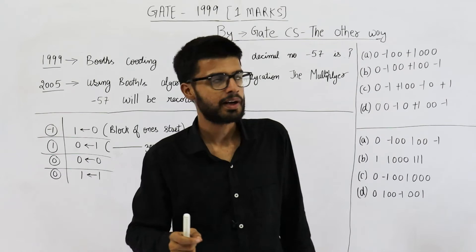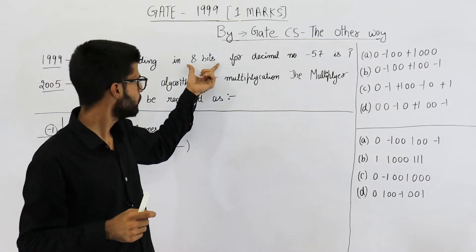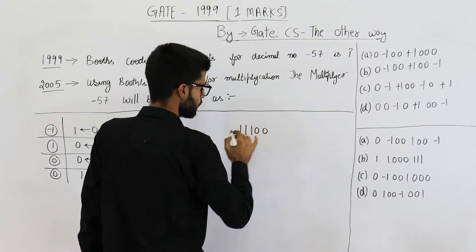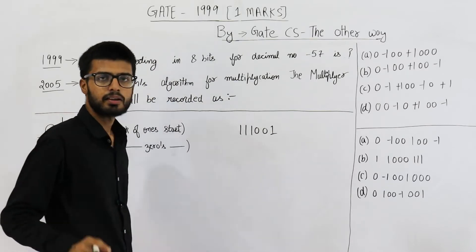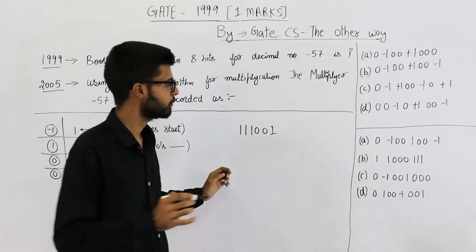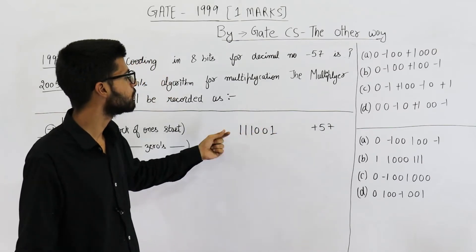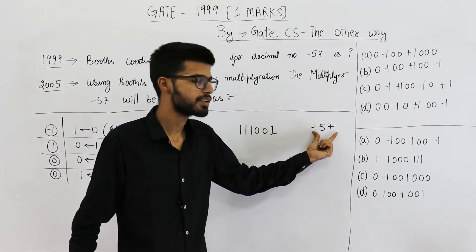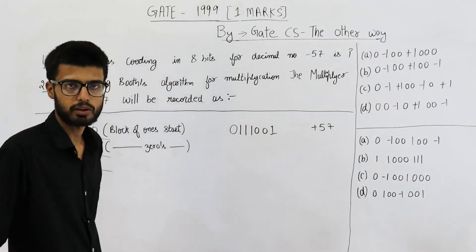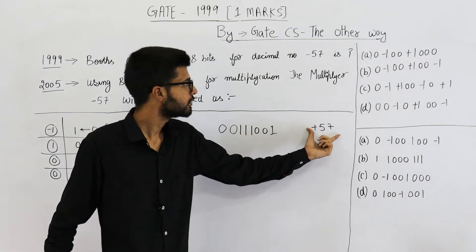For this, first we need to find how our multiplier is represented in 2's complement representation in 8 bits. Let's find the 2's complement representation in 8 bits of minus 57. This is the normal binary representation of plus 57. If I add a 0 here — is this the 2's complement representation of plus 57? No, because it begins from 1, it would represent a negative number. In normal binary representation it is 57. So to make it the 2's complement representation of plus 57, I add a 0 here, and to make it 8 bits, I add one more 0 here. This is the 2's complement representation of plus 57 in 8 bits.